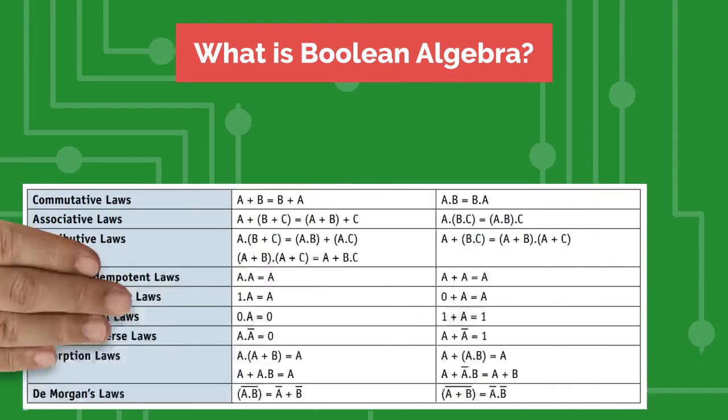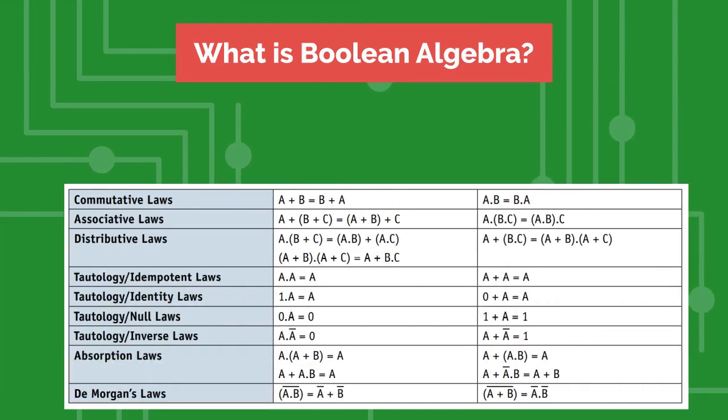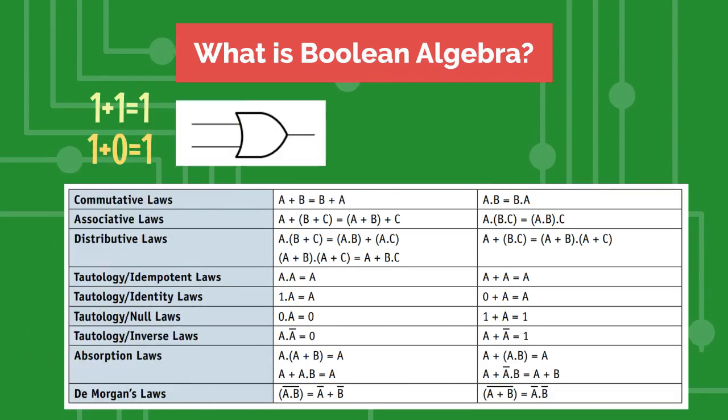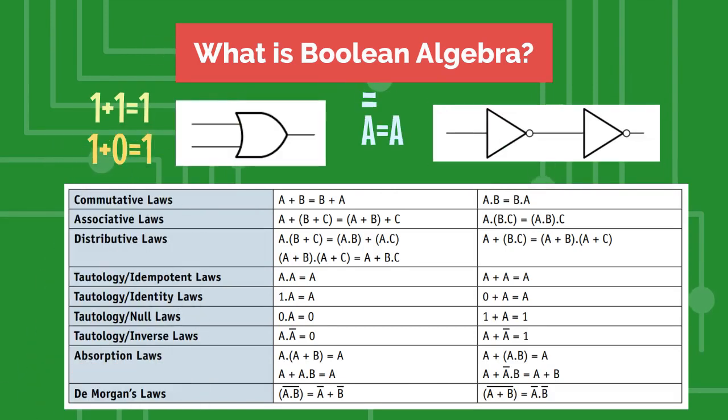The following table summarizes the rules that govern Boolean algebra. It also includes DeMorgan's laws. Also note that in Boolean algebra, 1 plus 1 equals 1, 1 plus 0 equals 1, and A double bar equals A.